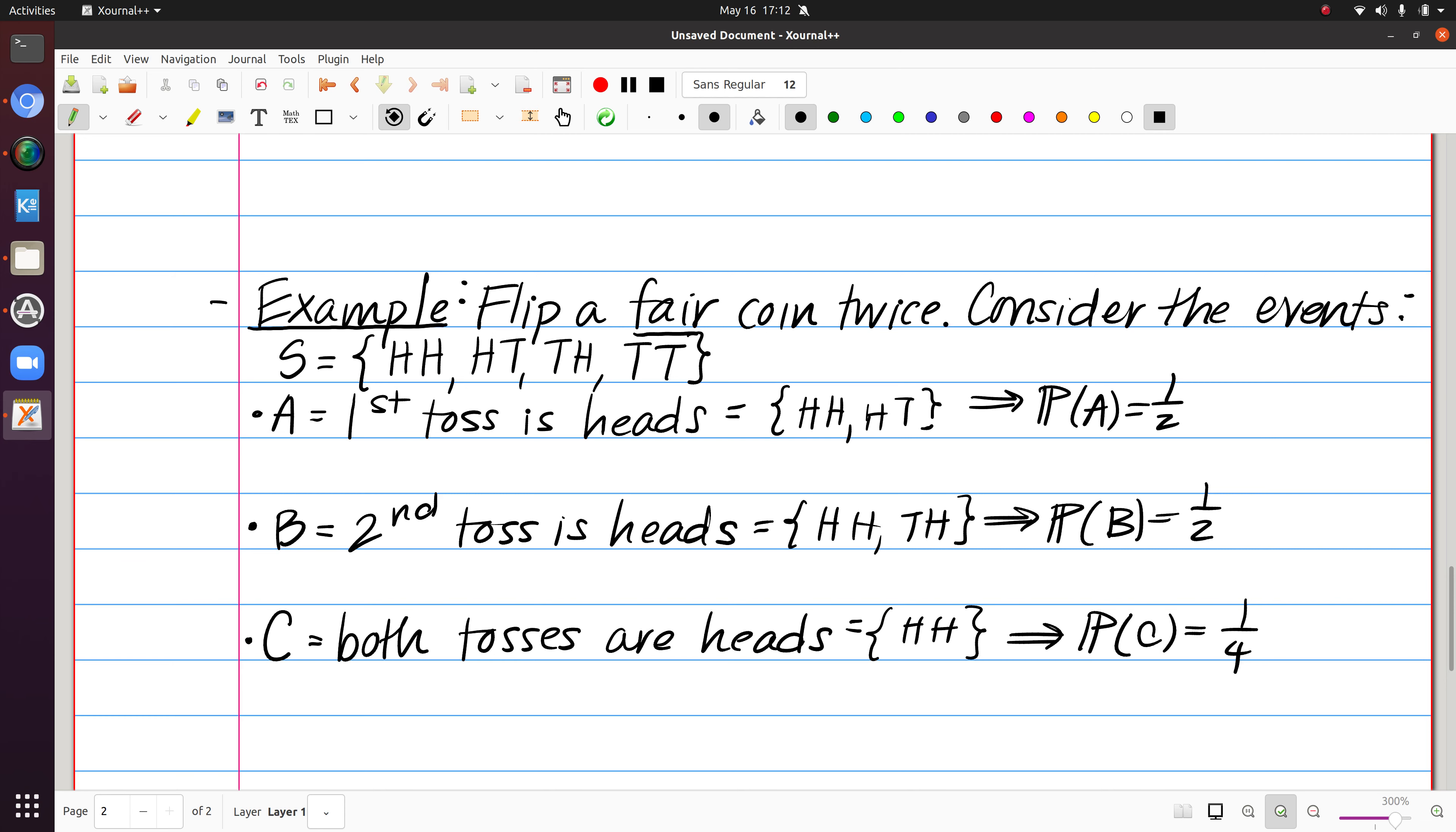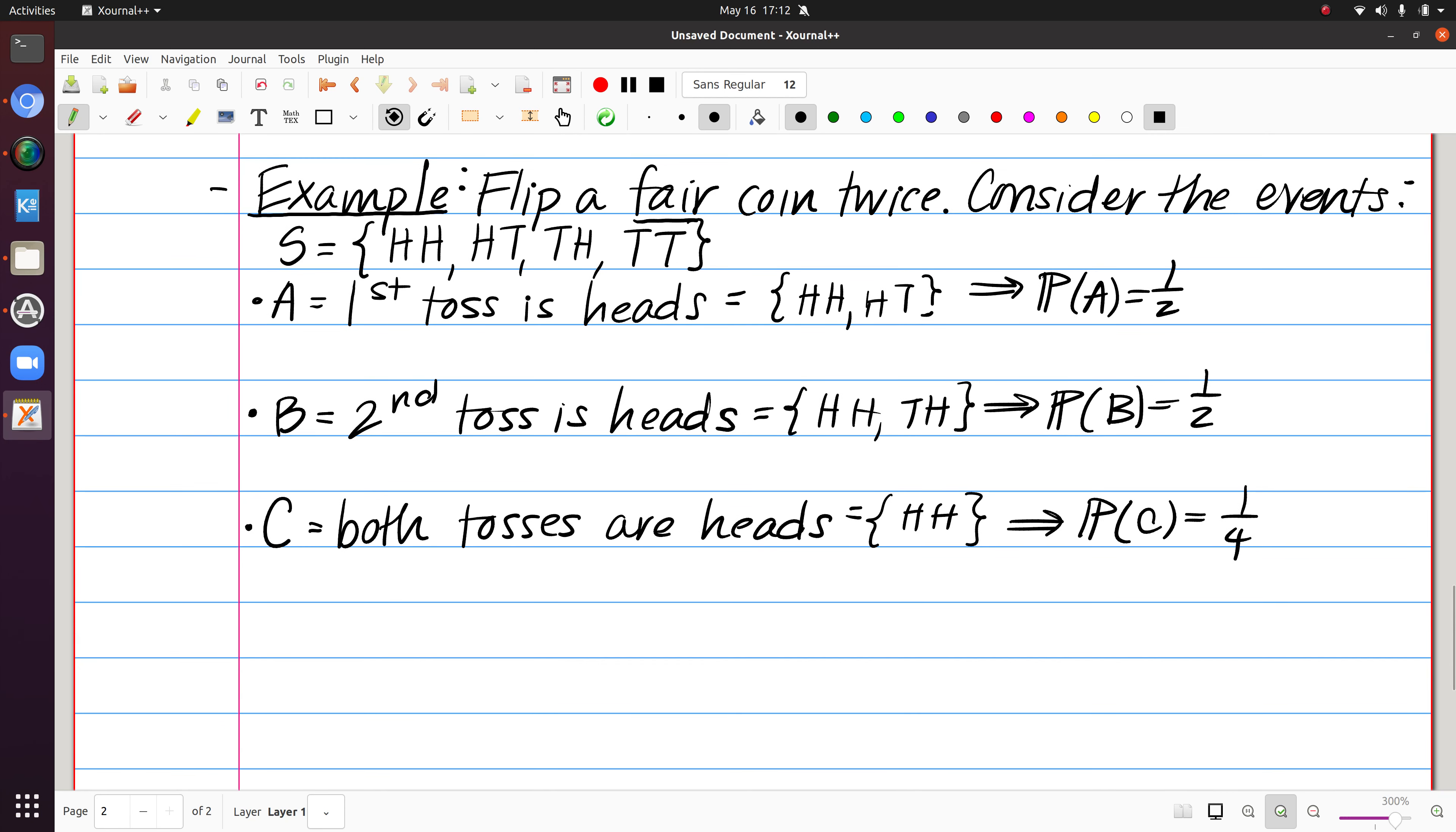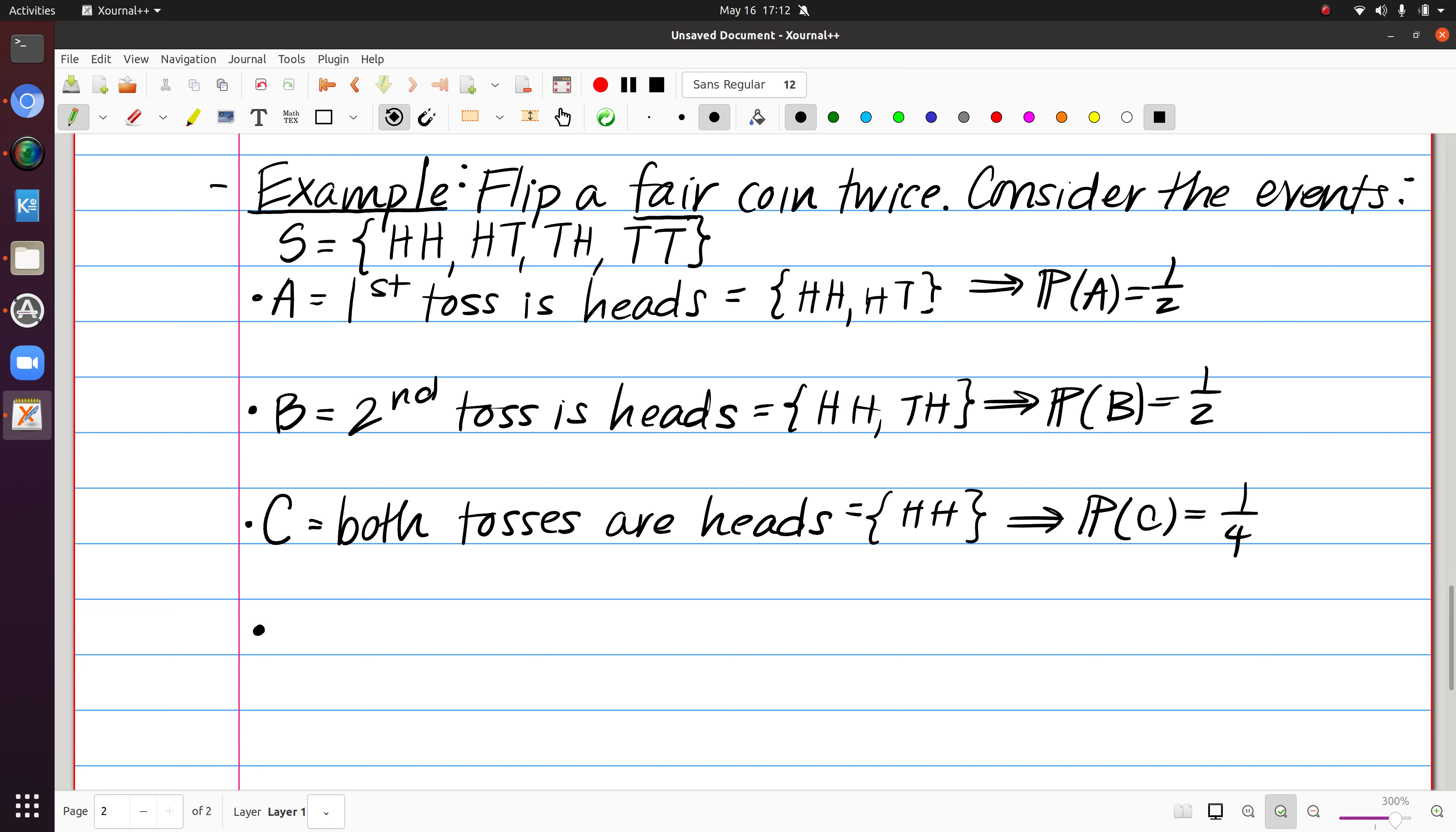So now let's consider if any pair of these is independent. In particular, what if we looked at A and B? The probability of A intersect B is, that's saying what's the probability that the first coin lands heads and the second one lands heads. Well, if you look at my outcome space, that's saying what's the probability that we get heads, heads, and that's going to be one fourth. And that also happens to equal the product of the probability of A and the probability of B. So this would be a way for me to confirm that A and B are independent.